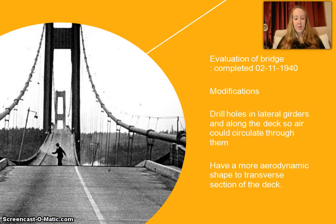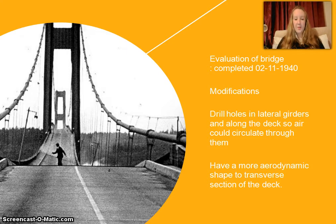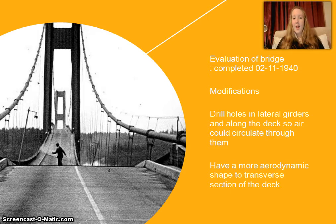Once the bridge was opened, it was obvious that there were some issues, and an evaluation of the bridge was ordered. This was completed on the 2nd of November, just five days before the collapse. Even though improvements were never made, some were suggested, including drilling holes in the lateral girders and along the deck so air could circulate through them, and having a more aerodynamic shape to the transverse section of the deck.